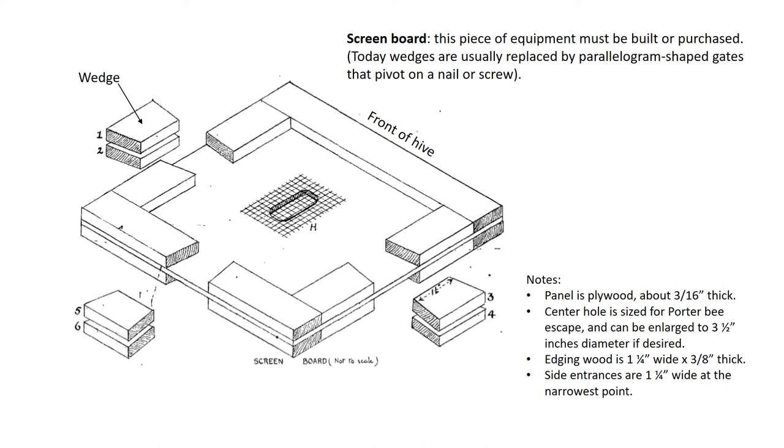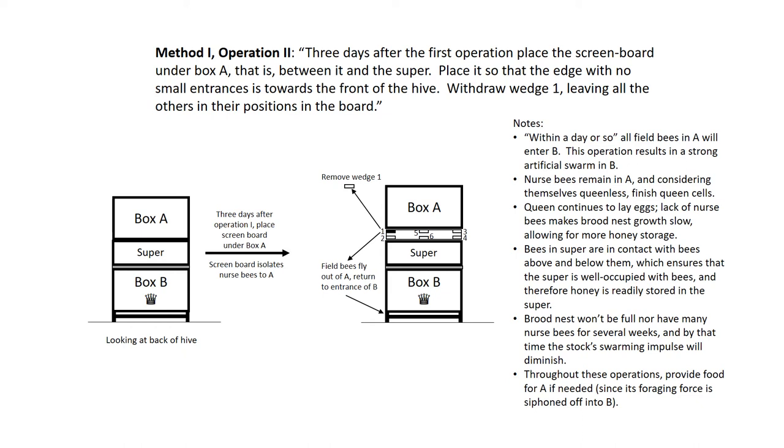Method one, operation two. Three days after the first operation, place the screen board under box A, that is between it and the super. Place it so that the wedge with no small entrances is toward the front of the hive. Withdraw wedge one, leaving all others in their positions in the board.